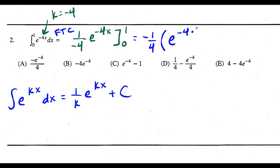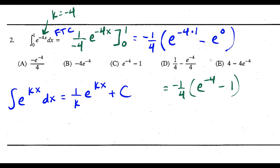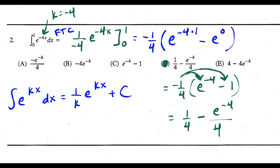We skip u-sub and use the formula: this is 1 over negative 4 times e to the negative 4x, evaluated from 0 to 1. I like to write the constant on the outside as negative 1 fourth. Plugging in, we get negative 1 fourth times e to the negative 4 minus 1. Distributing: negative 1 fourth times negative 1 gives positive 1 fourth, and negative 1 fourth times e to the negative 4 gives minus e to the negative 4 over 4. This matches choice D.